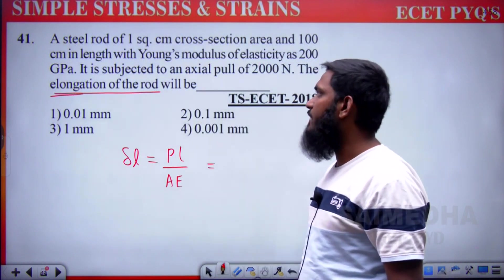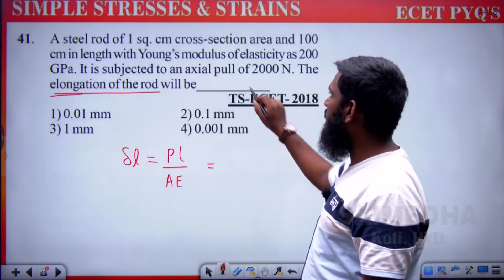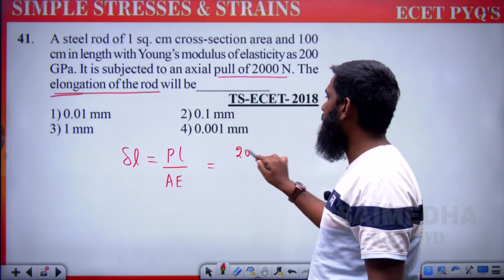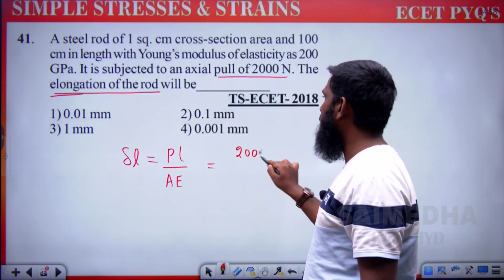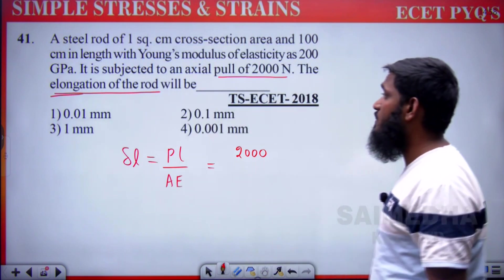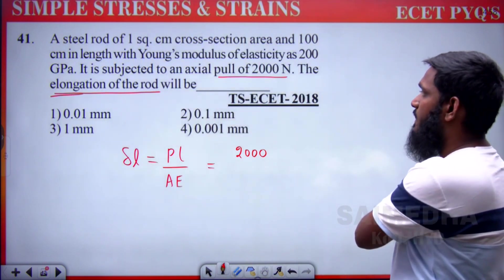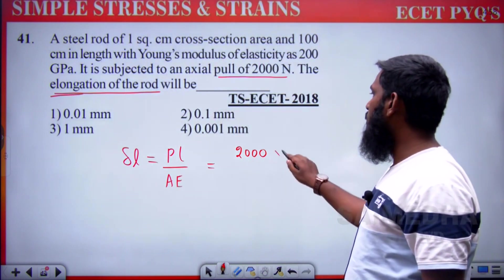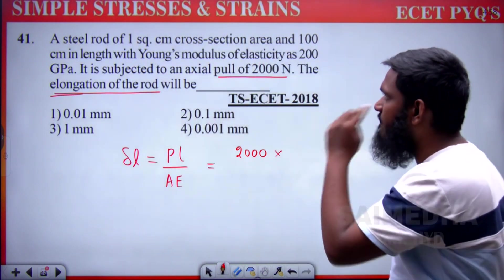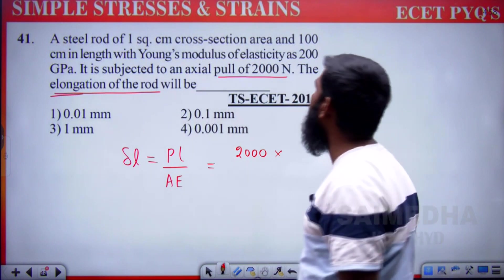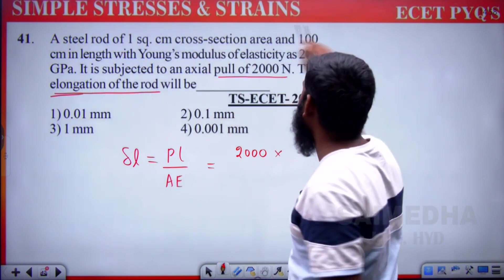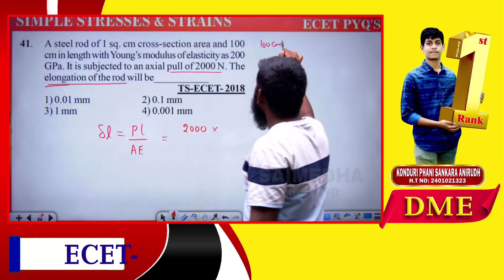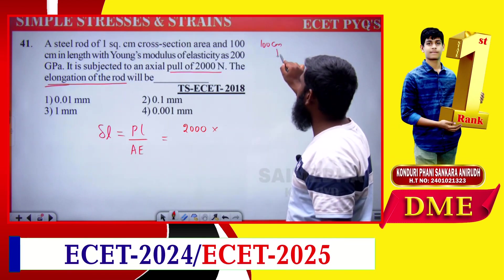Substituting: P is the axial pull = 2000 newtons. L is the length = 100 centimeters, which we convert to mm by multiplying by 10, giving 1000 mm.